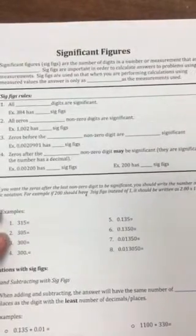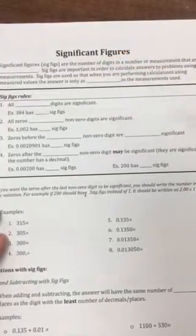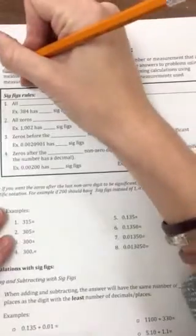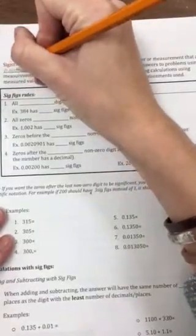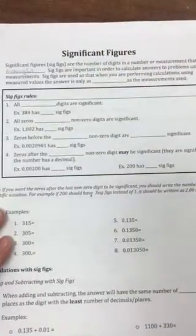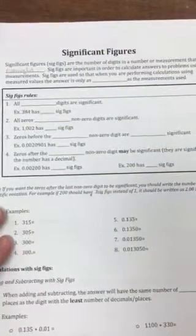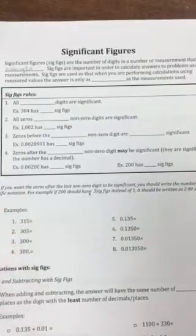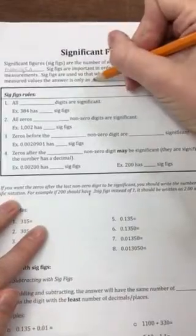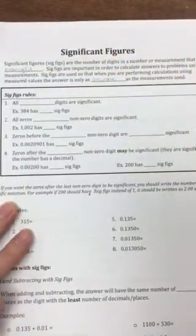We're going to learn about sig figs or significant figures. Significant figures are the number of digits in a number or measurement that are meaningful. Sig figs are important in order to calculate answers to problems using measurements. Sig figs are used so that when you're performing calculations using measured values, the answer is only as accurate as the measurement used.